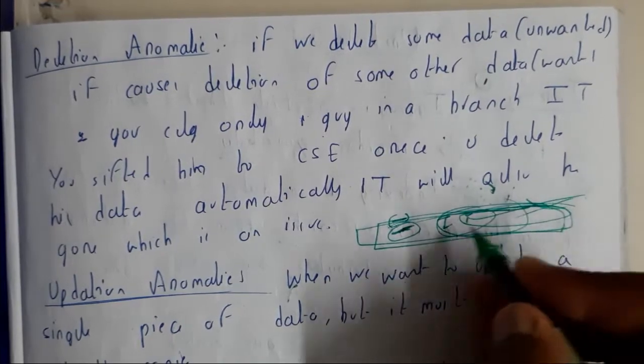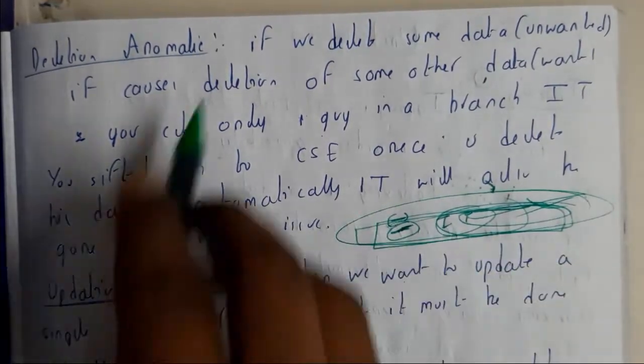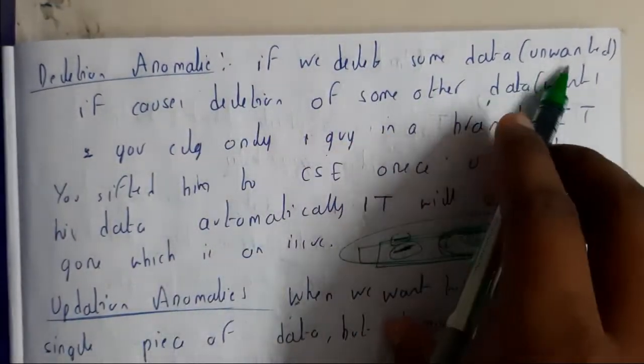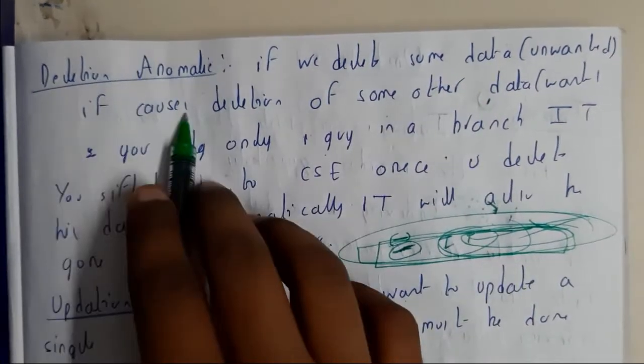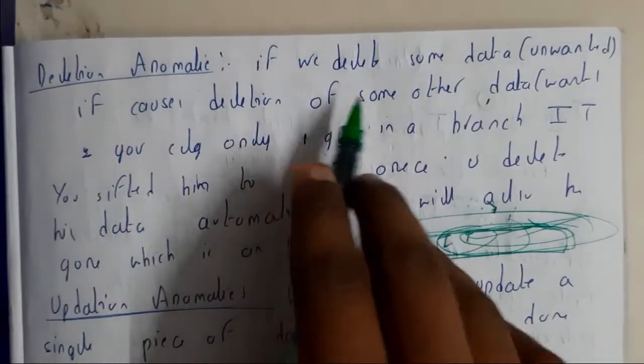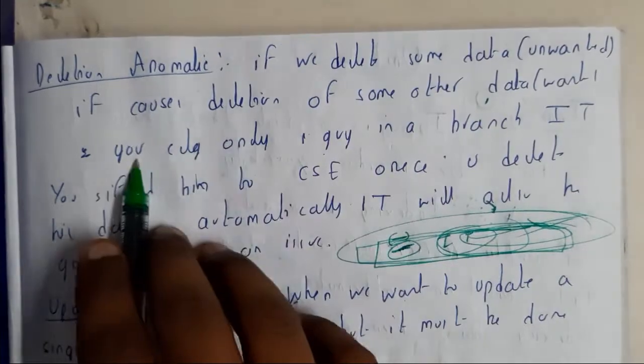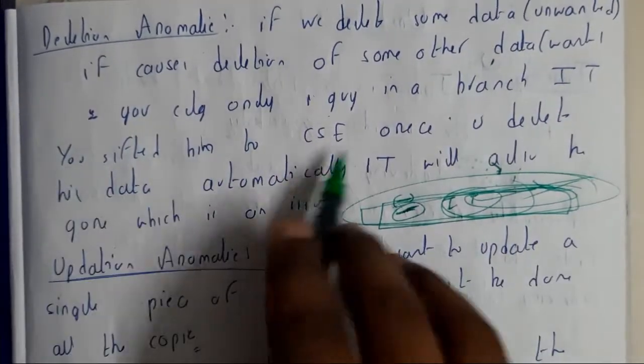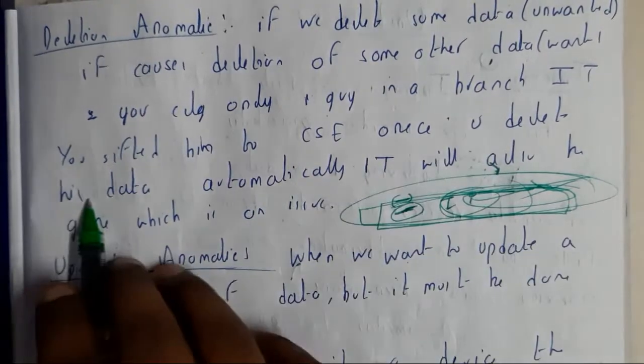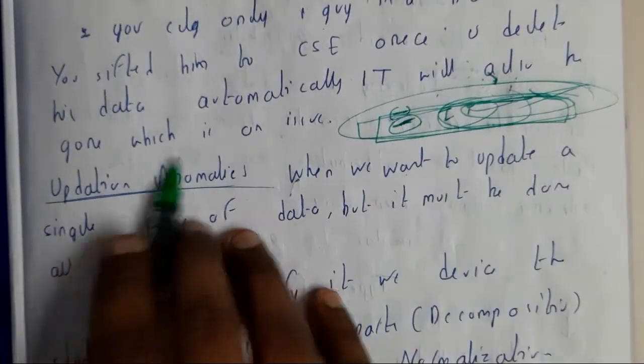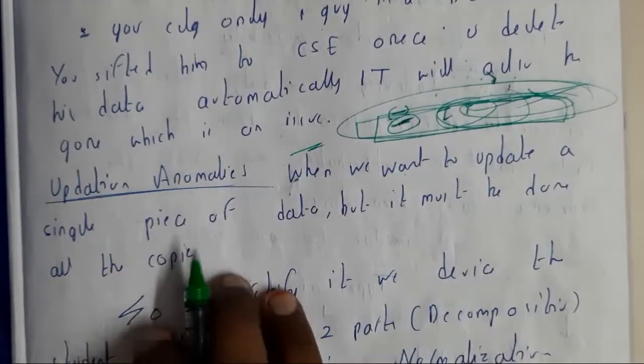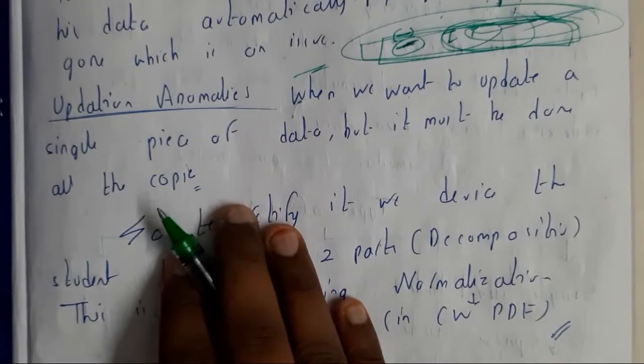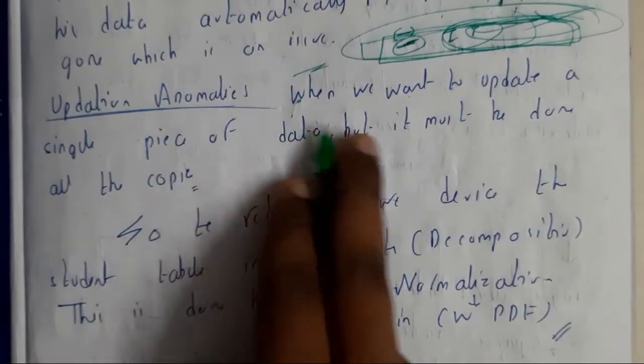This is deletion anomaly. If we delete some records, if it causes deletion of some other data which is wanted. Your college has only one student in IT branch, you shifted him to CSE. Once you deleted his data, automatically the IT will also be gone, which is an issue.